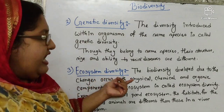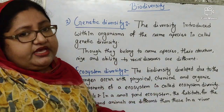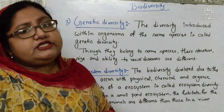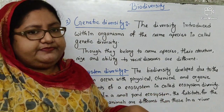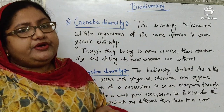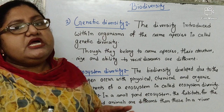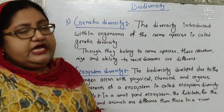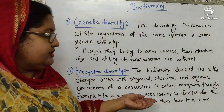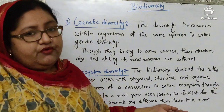Ecosystem diversity. The diversity developed due to changes that occur within the physical, chemical, or organic components of an ecosystem is called ecosystem diversity. For example, in the case of a pond, it has a particular ecosystem. On the other hand, in the case of a river, it also has a particular ecosystem. There are different components present in these two ecosystems, and between them there are some differences or diversities. For example, the habitats for plants and animals in a small pond ecosystem are different from those in a river ecosystem.